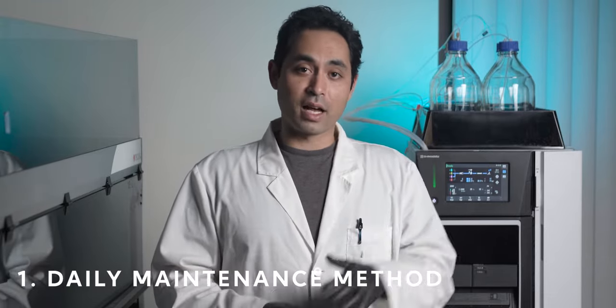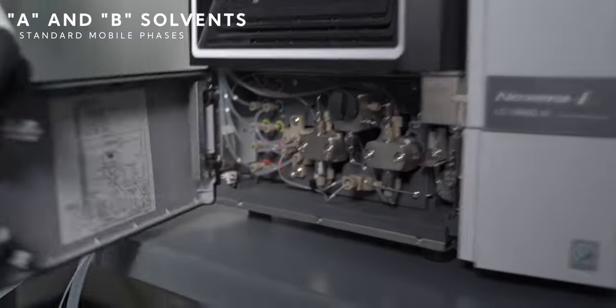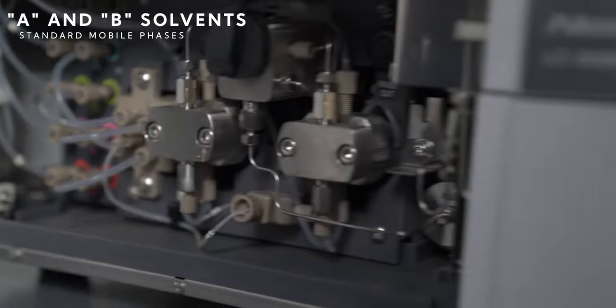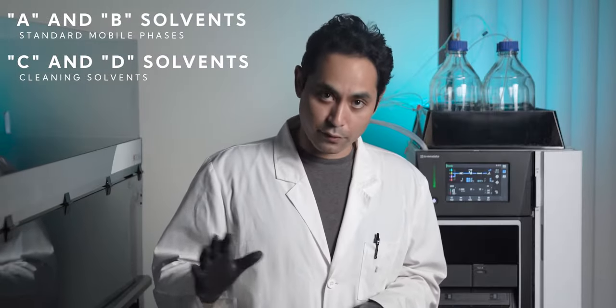The first method is your daily maintenance method. If you have a solenoid valve in your pump you can select up to four solvents. A and B solvents can be used as your standard mobile phases for regular operations. C and D then can be selected and used as solvents for cleaning. C and D would normally consist of water and some kind of organic solvent like methanol.